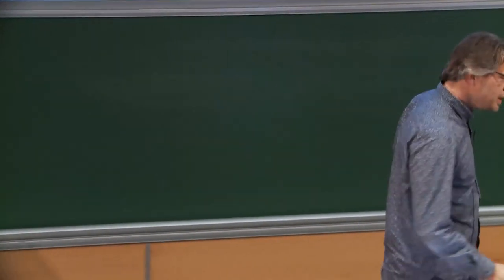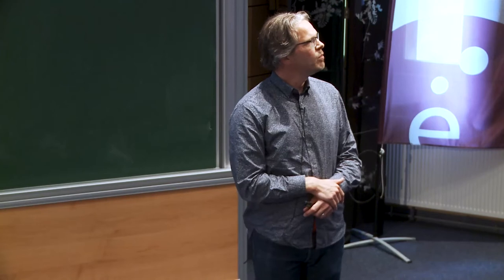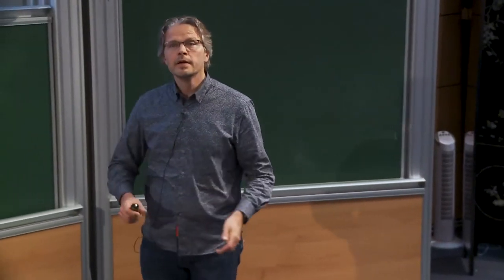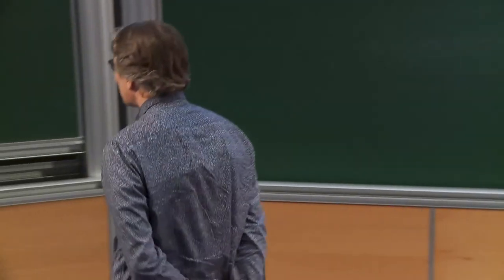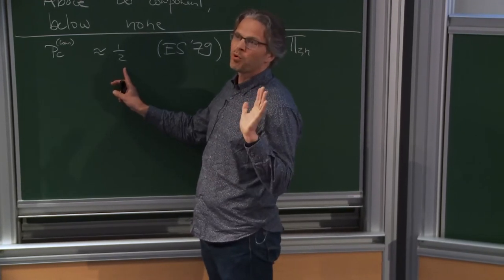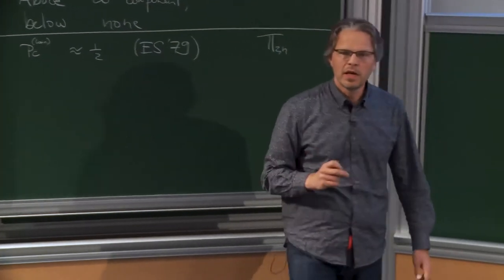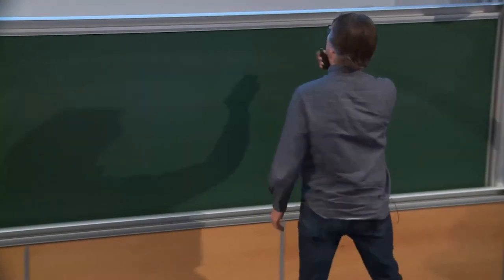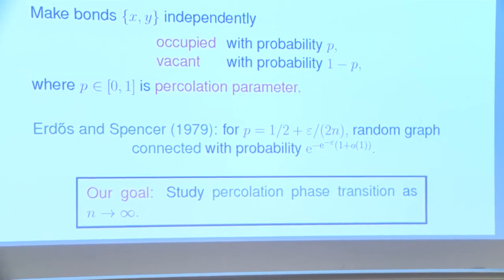What we'd like to study — as Erdős and Spencer proposed — is not the connectivity threshold but the occurrence of a large cluster as p varies. We'll see that p must be much smaller for that. There's a Hamming-type argument: there are 2^n points, the probability for a point to be isolated is (1/2)^n, so the expected number of isolated points at p = 1/2 is precisely one.